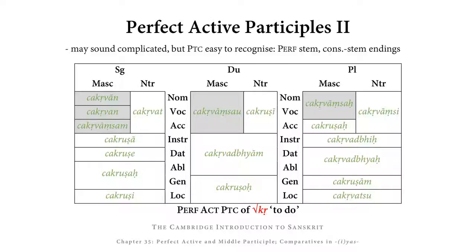In the plural, the instrumental, dative, and ablative have endings that begin with consonants — BYCH, BYAH, and BYAH. These begin with voiced consonants, so the weak suffix appears as WAD: CHAKR WAD BYCH, CHAKR WAD BYAH, CHAKR WAD BYAH. In the genitive plural, the ending AM begins with a vowel, so the suffix appears as USH, giving CHAKRUSHAHM.